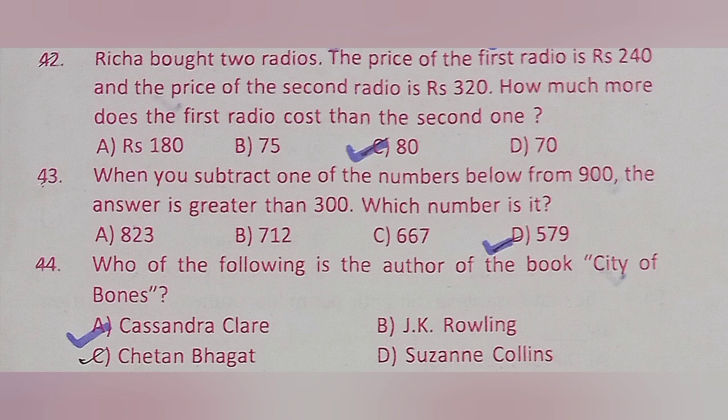Question 42: Richard bought two radios. The price of the first radio is rupees 240 and the price of the second radio is rupees 320. How much more does the second radio cost than the first? Option A: rupees 120, Option B: 75, Option C: 80, Option D: 70. The correct answer is Option C: rupees 80.